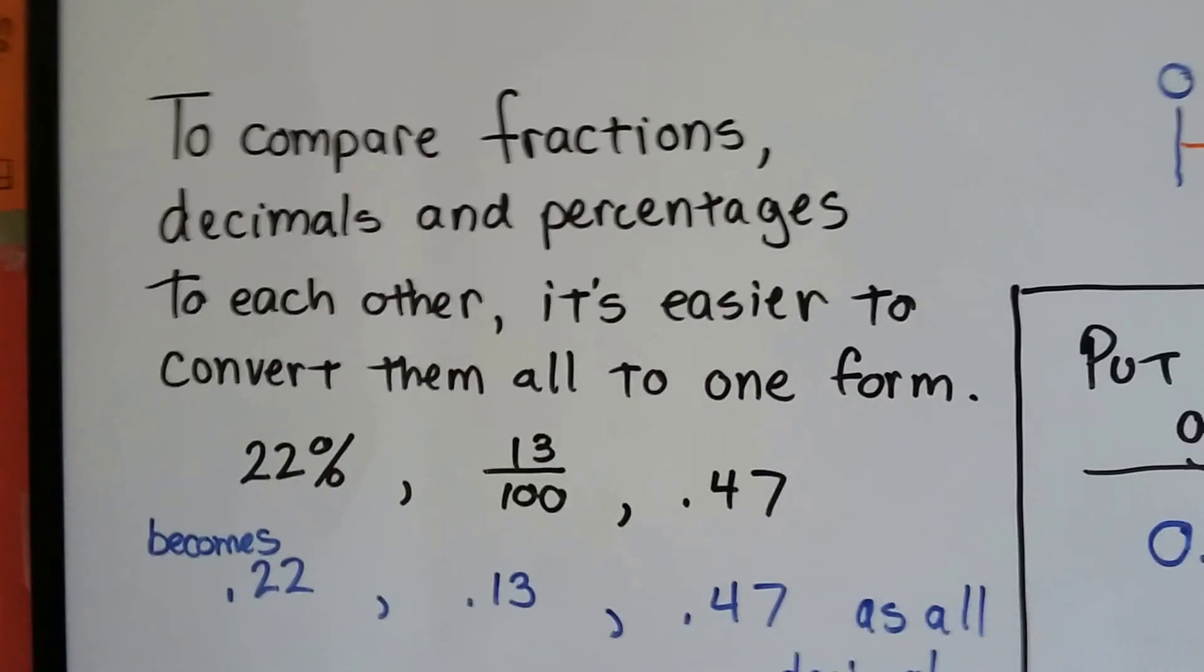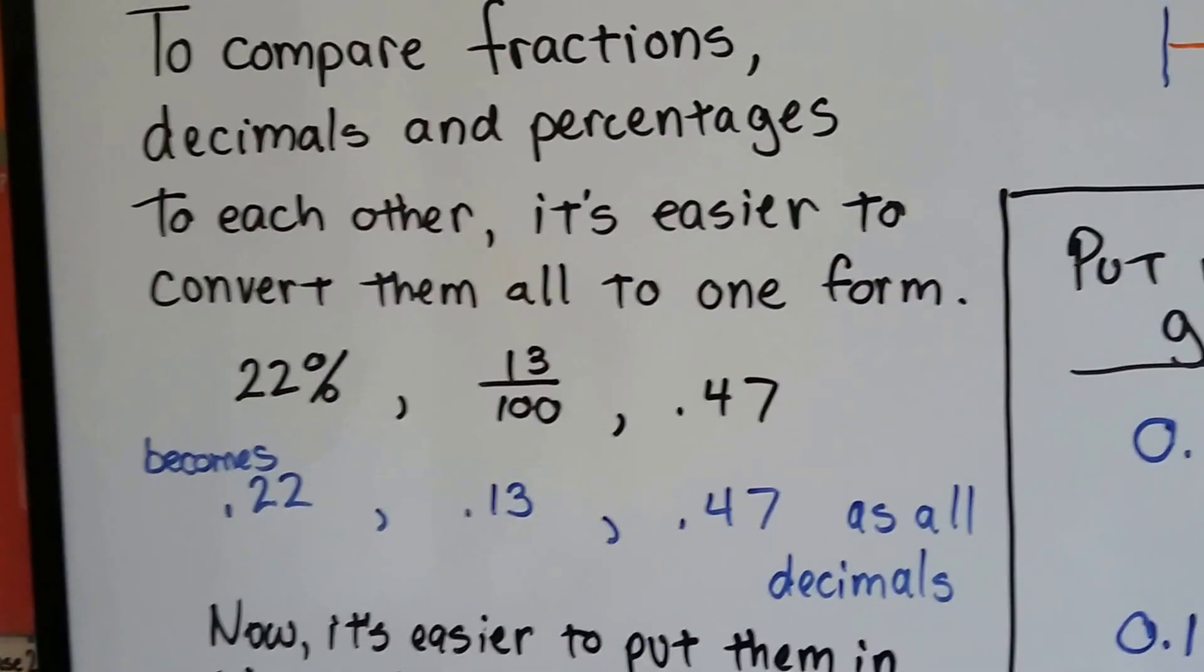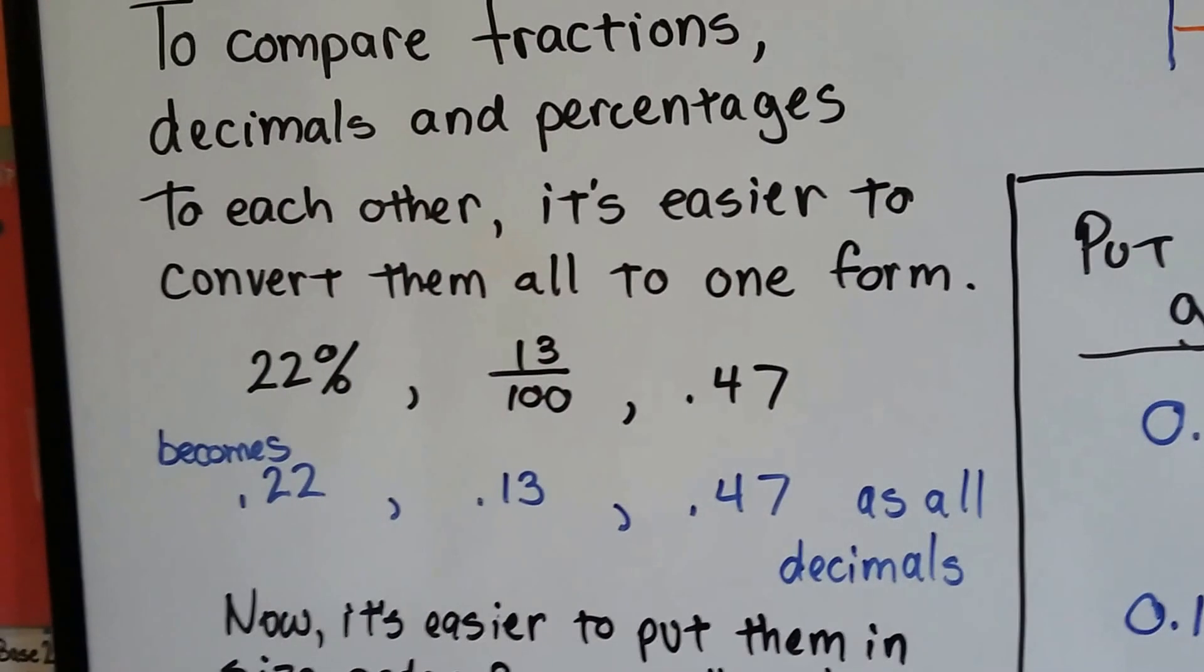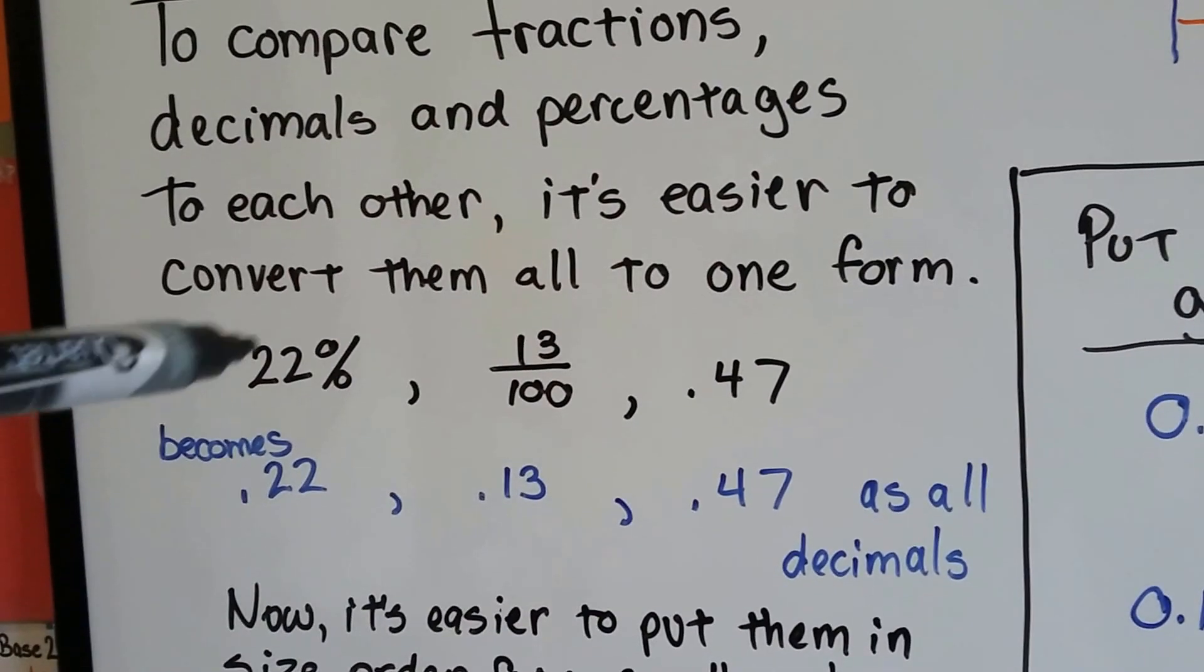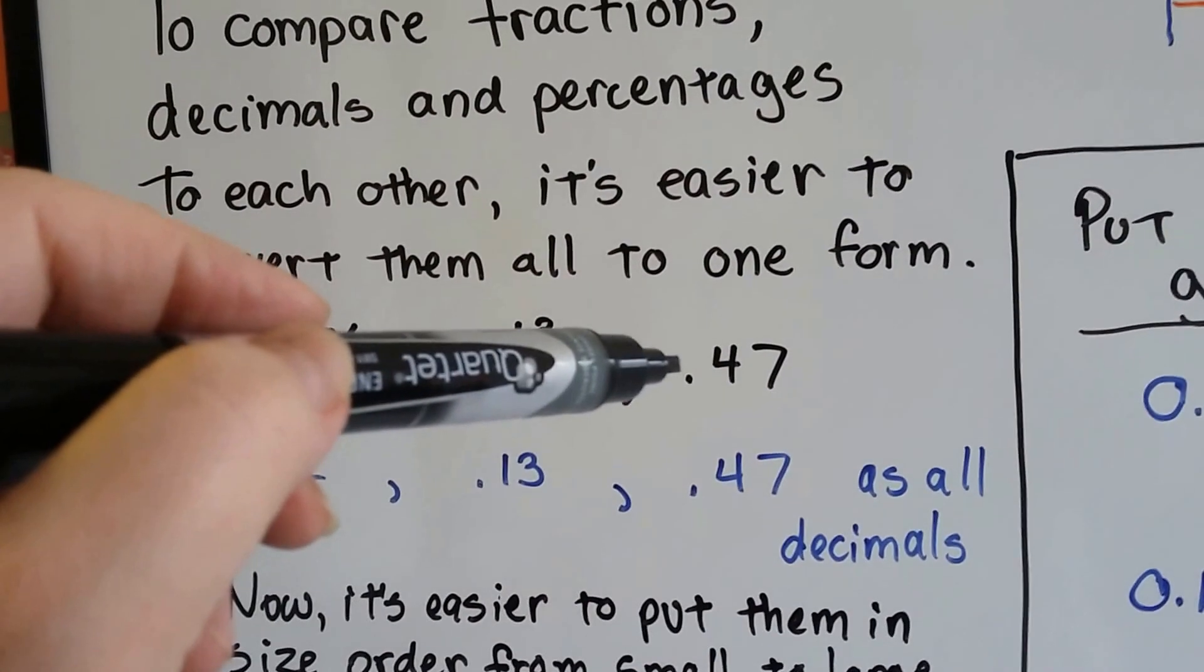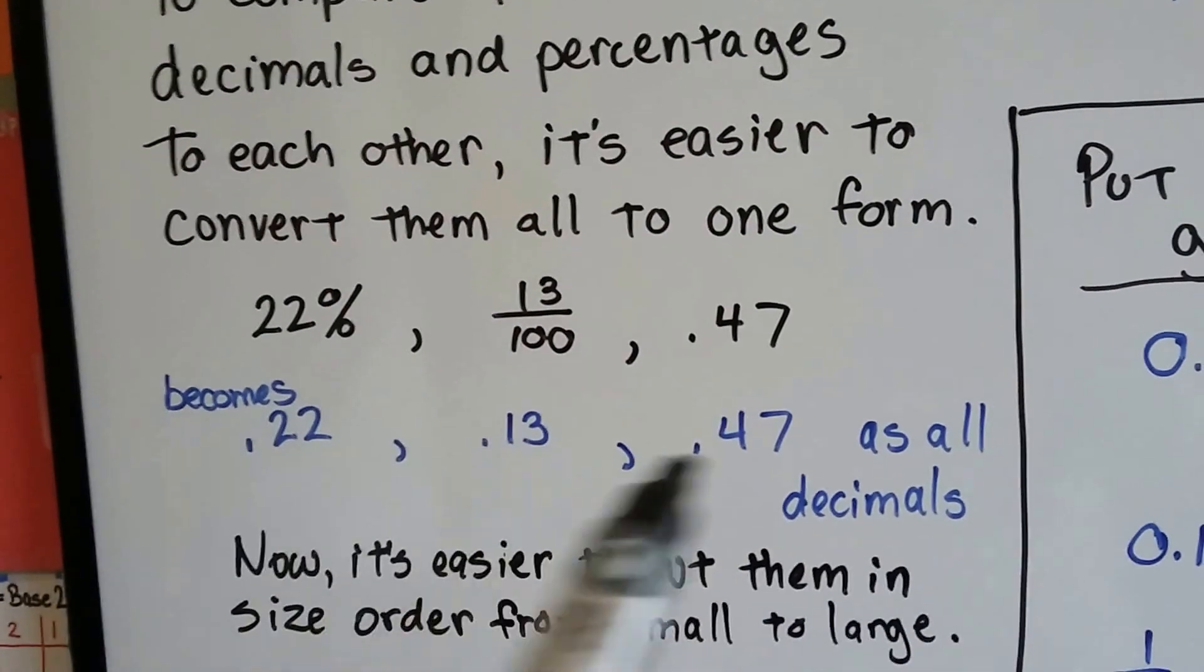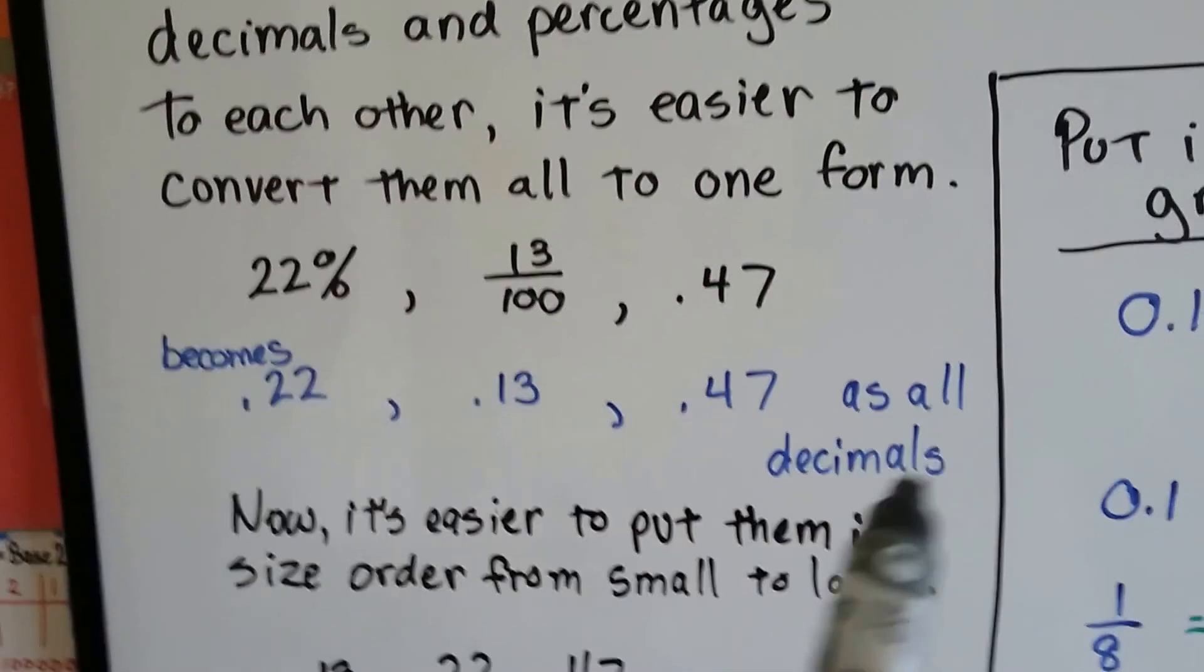Well, we're going to compare fractions and decimals and percentages to each other, and it's easier to convert them all to one form. So if we have 22 percent, 13 hundredths, and 0.47, 47 hundredths, if we move them all over to decimals,